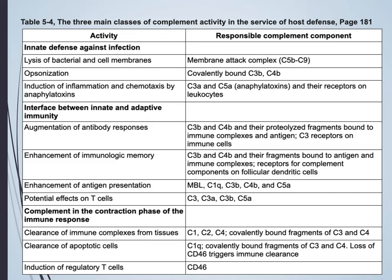The three main classes of complement activity as host defense are: innate defense against infection through lysis of bacterial and cell membranes via the MAC; opsonization, where C3B and C4B bind to the surface signaling phagocytes to engulf the labeled cells; and initiation of inflammation and chemotaxis by the anaphylatoxins C3A and C5A, which activate leukocyte receptors and trigger inflammation.